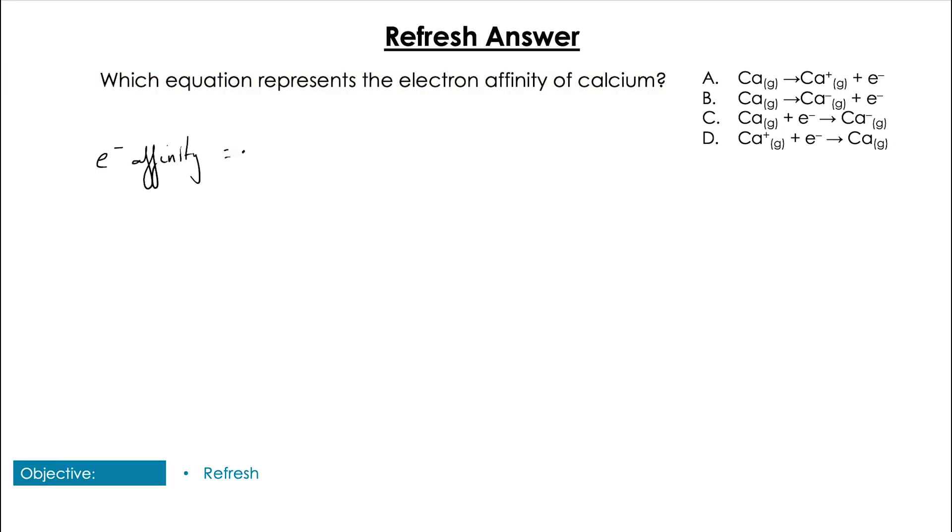Hopefully you remember that electron affinity is the enthalpy change when one mole of a gaseous atom gains one mole of electron forming the minus ion. And so if we look at our list we can see that that is going to be C.